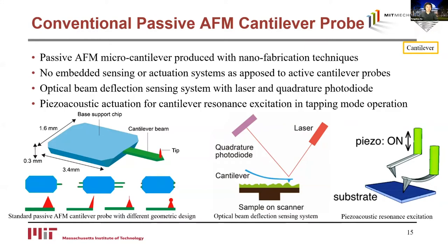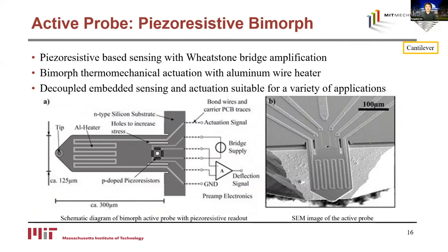In our case, we use a piezoresistive biomorph active probe where sensing and actuation elements are embedded using nanofabrication techniques. Four piezoresistive sensing elements in a Wheatstone bridge configuration are placed at the top surface of the cantilever fixed end, where internal stress from beam bending is maximized. This allows embedded measurement of cantilever deflection without transparency requirements. To control the cantilever deflection, a bimorph layer with silicon and silicon nitride is heated using aluminum wiring in a serpentine shape for thermo-mechanical actuation. With this design, both resonance excitation and static deflection of the cantilever can be controlled individually — making it ideal for opaque liquid environment imaging.